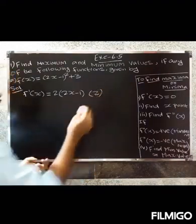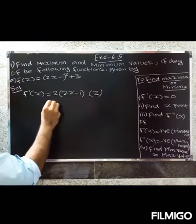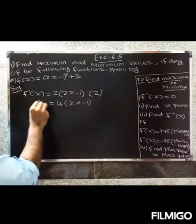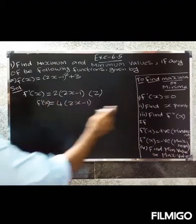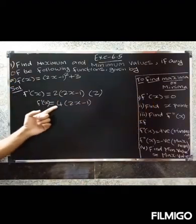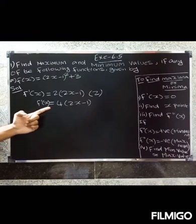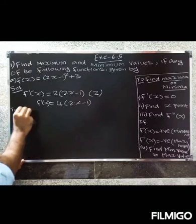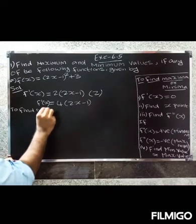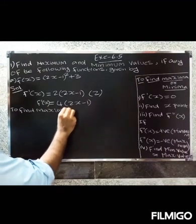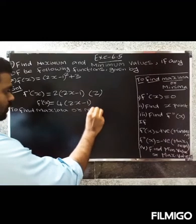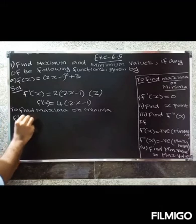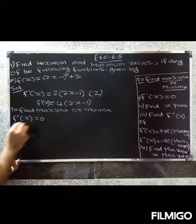So f'(x) equals 4(2x - 1). Now set f'(x) equal to zero to find the critical point for maxima or minima. So f'(x) = 0 gives us 4(2x - 1) = 0.